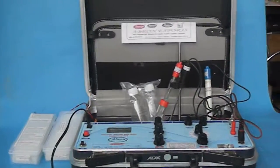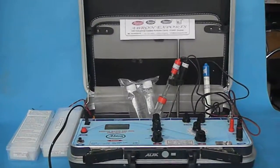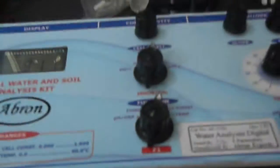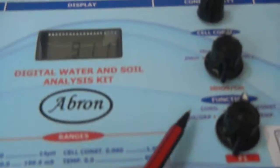This is the Water and Soil Analysis Kit by Abron Export. The kit has four parameters which is pH and ORP.